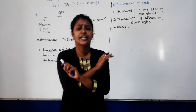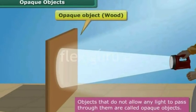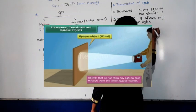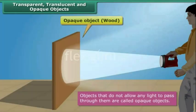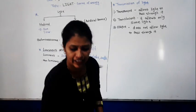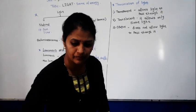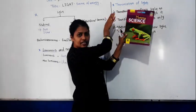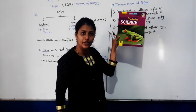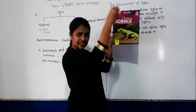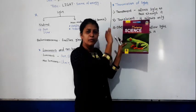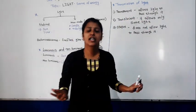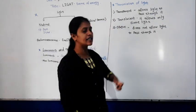Next is opaque. Opaque means it does not allow light to pass through it. That material is called opaque. For example, if you take a book, you cannot see the things behind it because it does not allow light to pass through it. So these are the three types of material: transparent, translucent, and opaque.